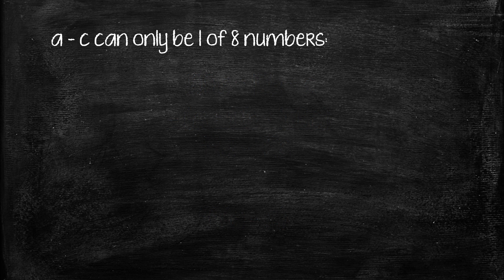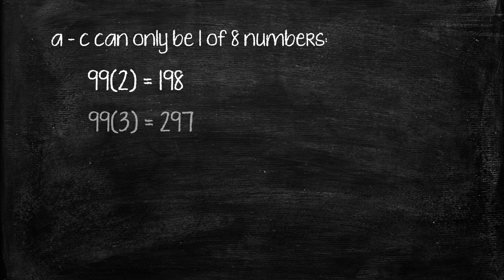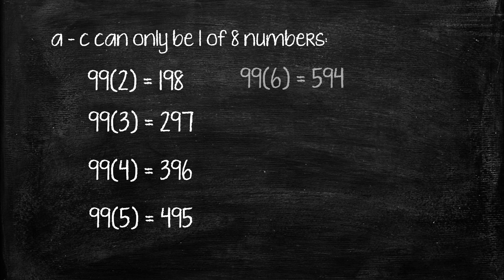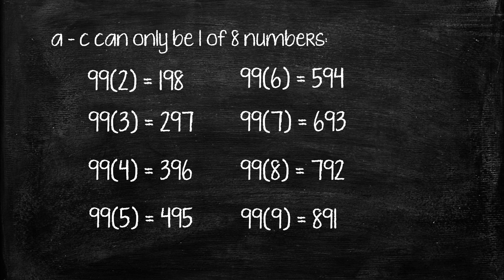So that means that A minus C can only be one of eight numbers. If we substitute 2 for a value of A minus C, 2 times 99 equals 198. And that means that 3 times 99 is 297, 4 is 396, 5 is 495, and so on until we reach 9, which is equal to 891.